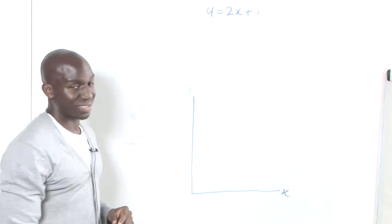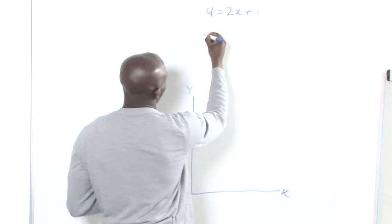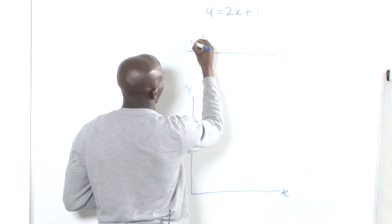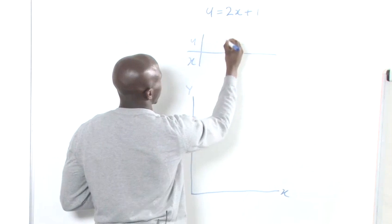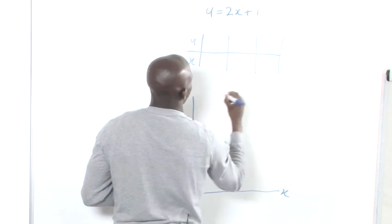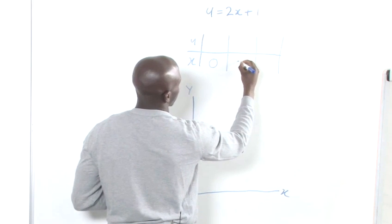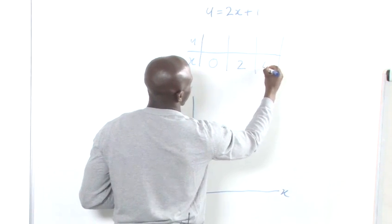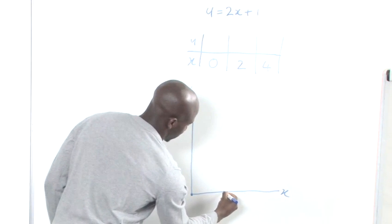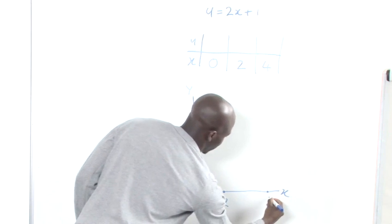Now what I'm going to do is select three particular x values, which I'll do here. So we have y and we have x. So we have x equals 0, x equals 2, and x equals 4. So we've got 2 and we've got 4.